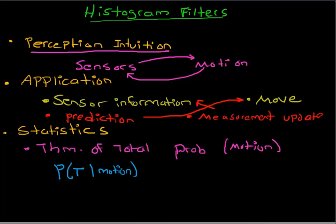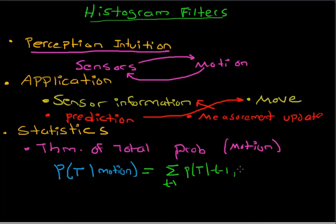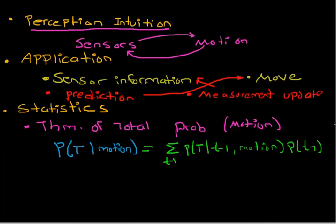This is going to use the theorem of total probability by conditioning this probability on the previous time step. From any time step t, we could come from a previous time step t-1. This will be solved by a sum over all t-1 — for all previous time steps — of the probability of t conditioned on t-1 and motion, times the probability of t-1. This is just the straight definition of the theorem of total probability.